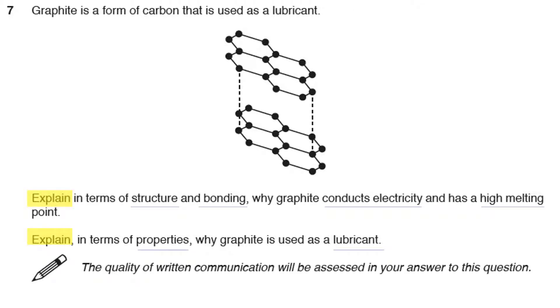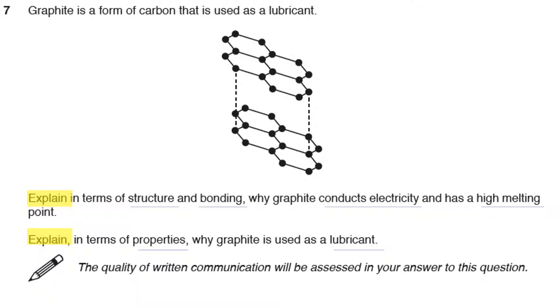We've got explain—explain is the command word here and I've underlined some other important parts too. So let's have a look at this question. Graphite is a form of carbon that's used as a lubricant. Explain in terms of structure and bonding why graphite conducts electricity and has a high melting point. Explain in terms of properties why graphite is used as a lubricant. Right, so now put yourself in the examiner's position.